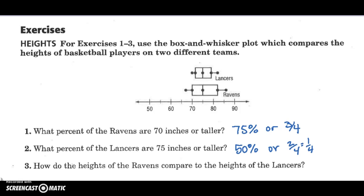Thank you. All right, hopefully you're learning how to read these. So what percent is 70 inches or taller on the Ravens? Well, here's 70. So that's 1-fourth, 2-fourths, 3-fourths, which is 75%. And then for the Lancers, 75 inches or taller. Well, here is 75. So that's 1-half, 2-half, and 2-half equals, not 1-fourth, 1-half.